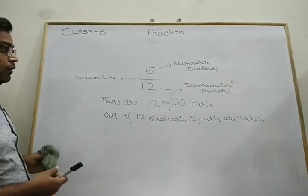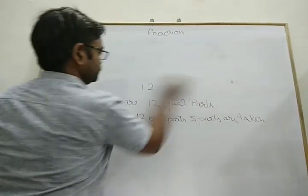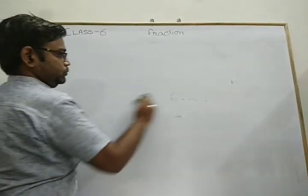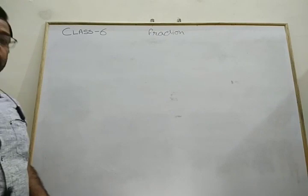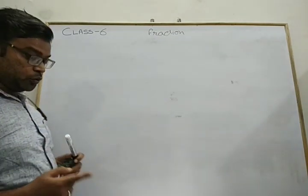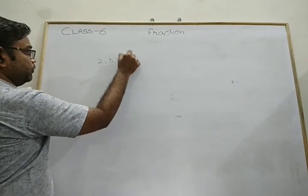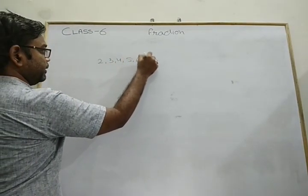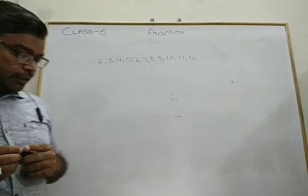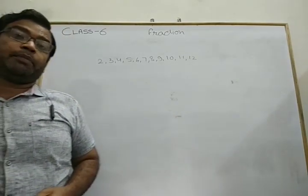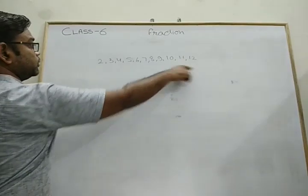Now I am using one example from your book — Example number 2. Write natural numbers from 2 to 12: 2, 3, 4, 5, 6, 7, 8, 9, 10, 11, and 12. The question asks: what fraction of them are prime numbers? First, count the total natural numbers.